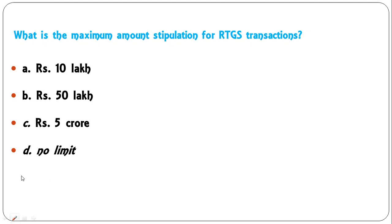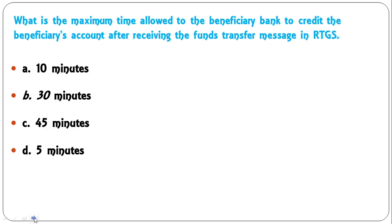What is the maximum transaction amount for RTGS? The options are: ₹10 lakh, ₹50 lakh, ₹5 crore, or no limit. For RTGS transactions, there is no maximum limit — D is correct; you can send as much money as you want. What is the maximum time allowed to the beneficiary bank to credit the beneficiary's account after receiving the funds transfer message in RTGS? Although RTGS is a real-time settlement, the maximum time given is 30 minutes — B is correct.